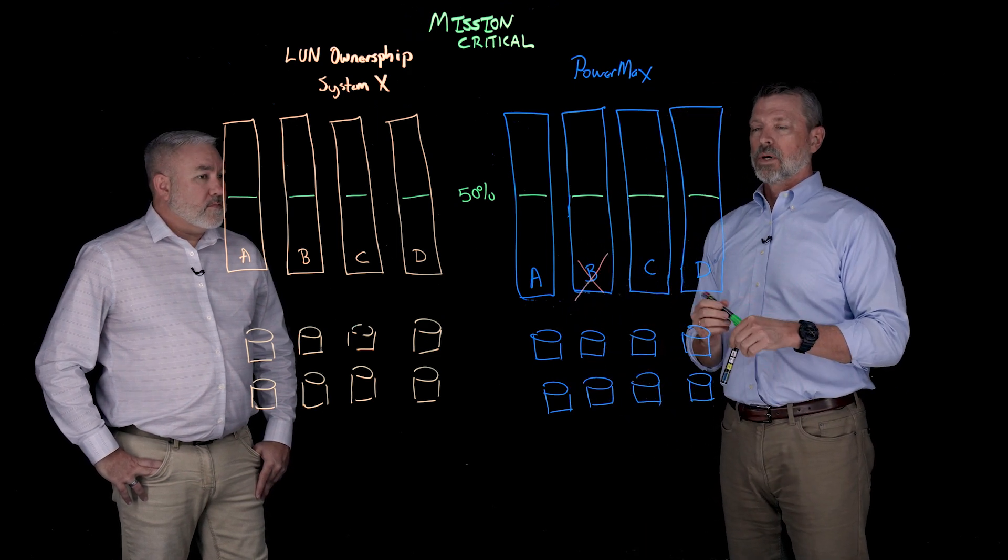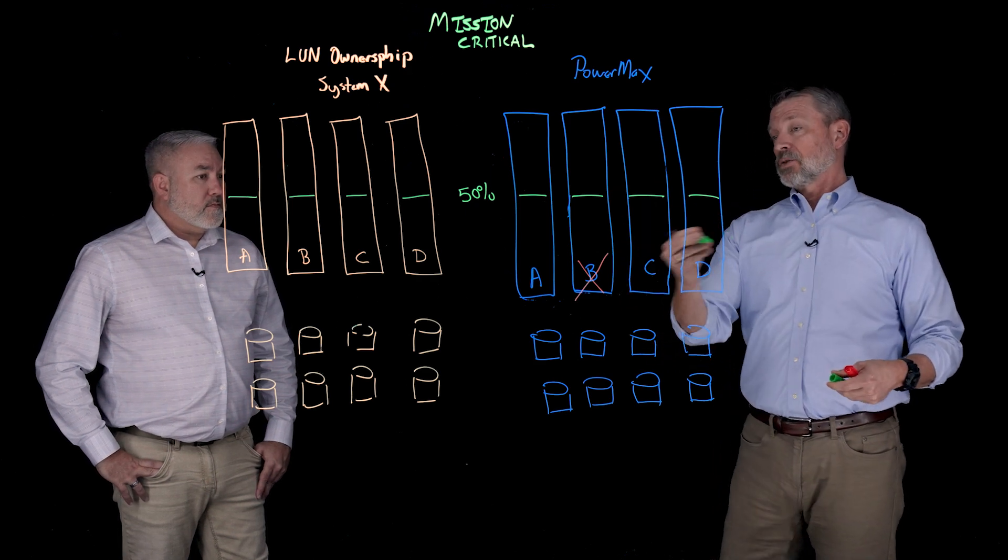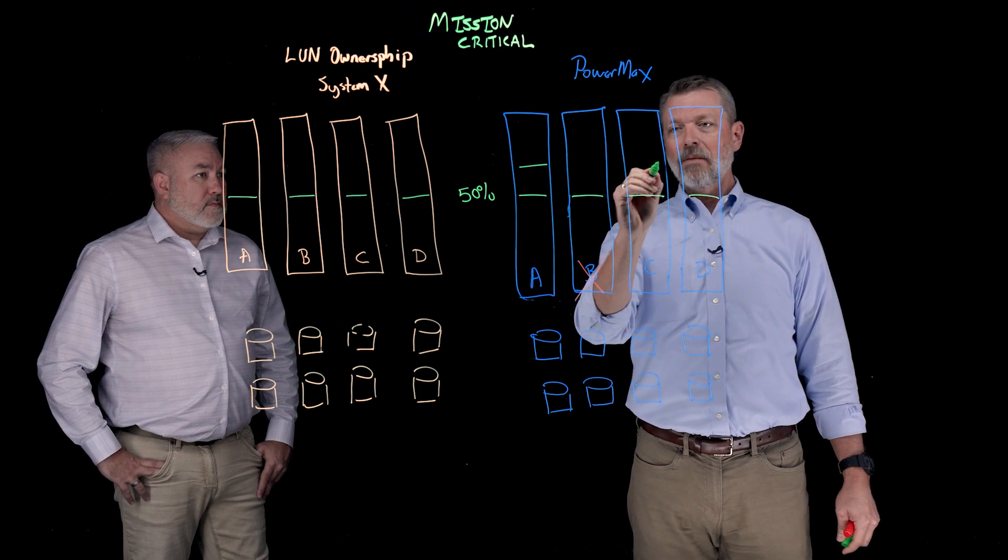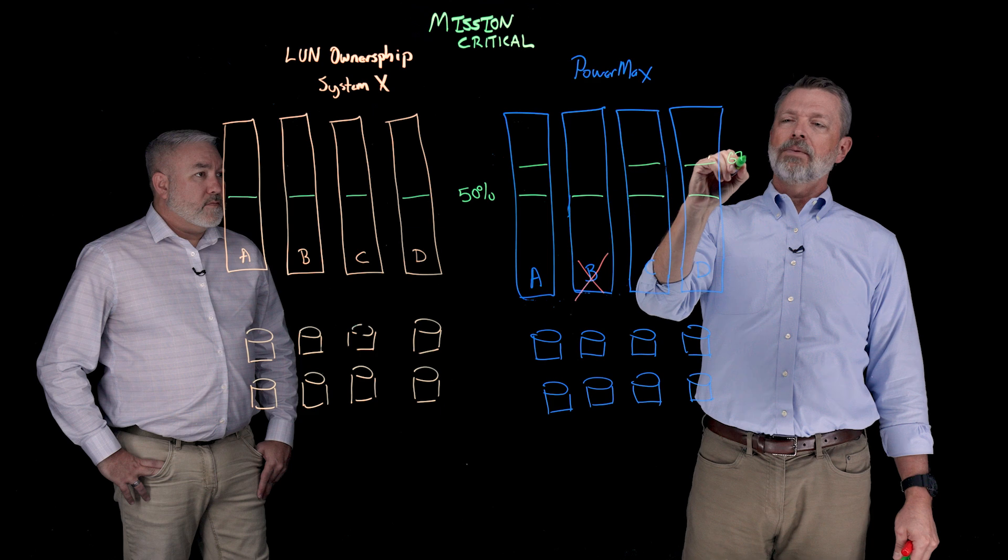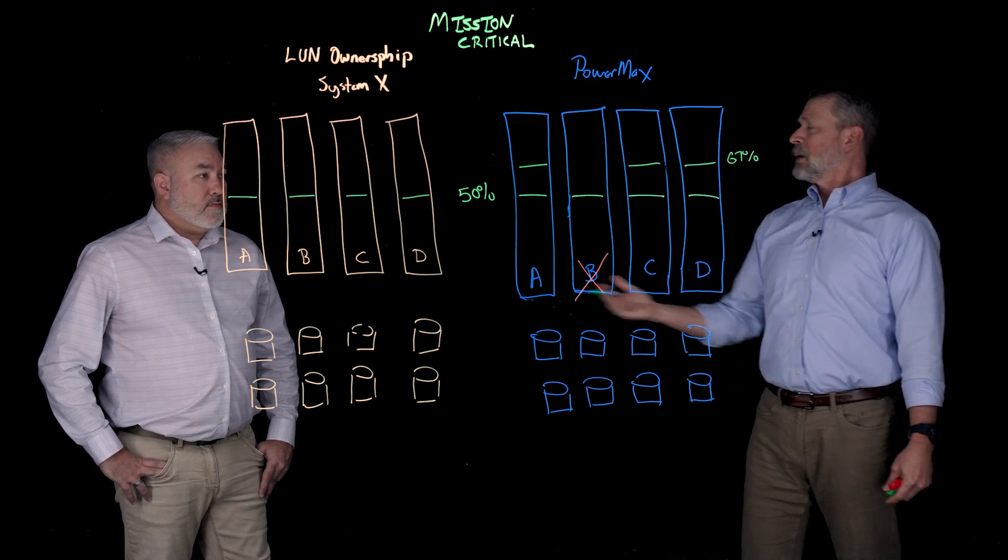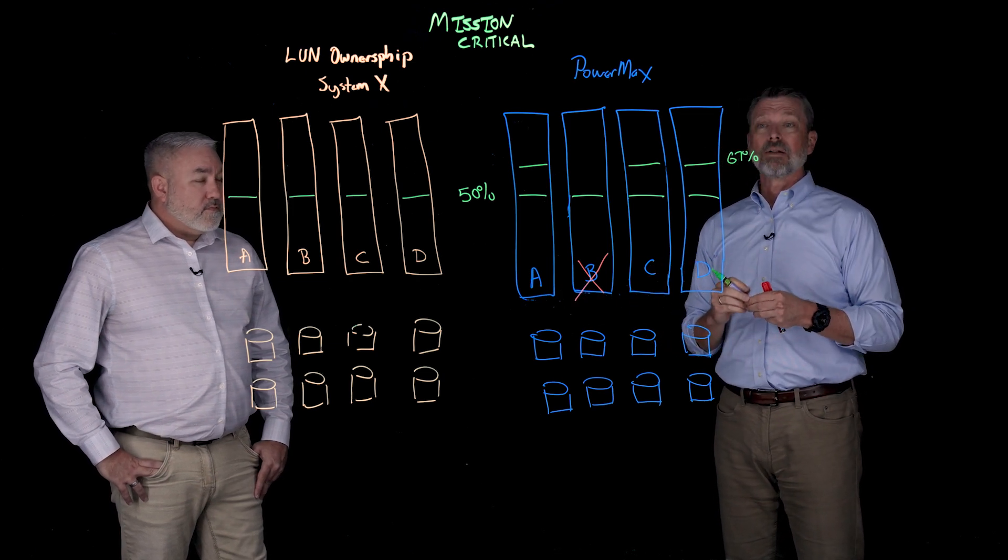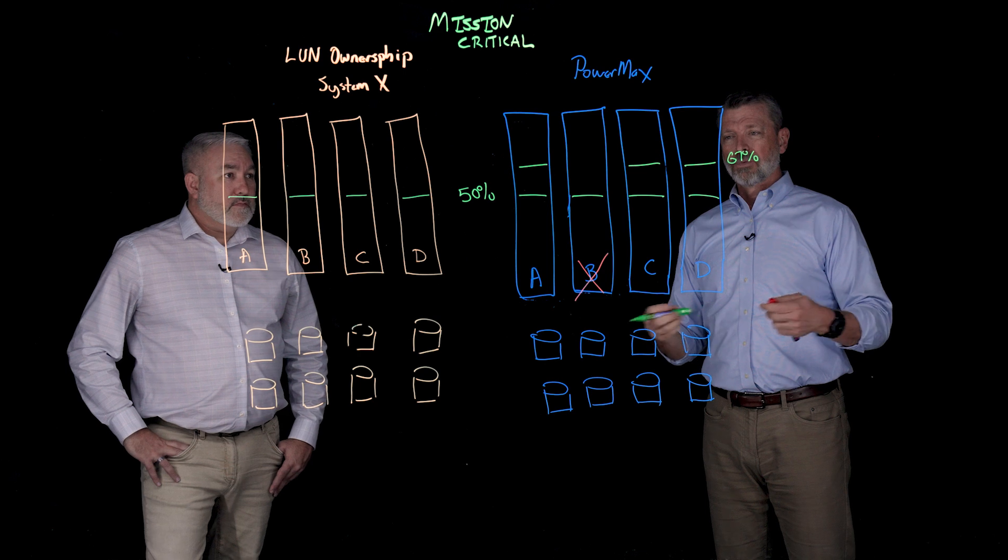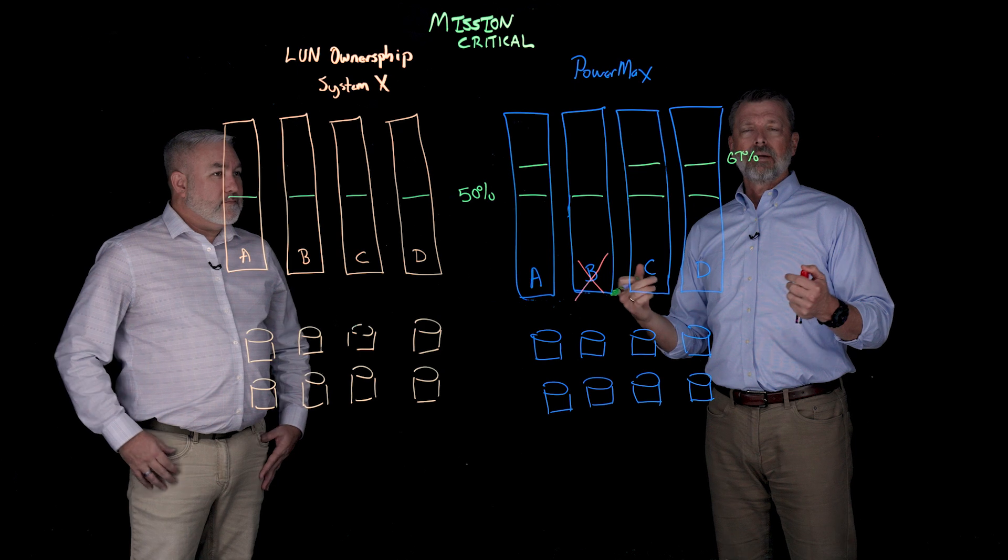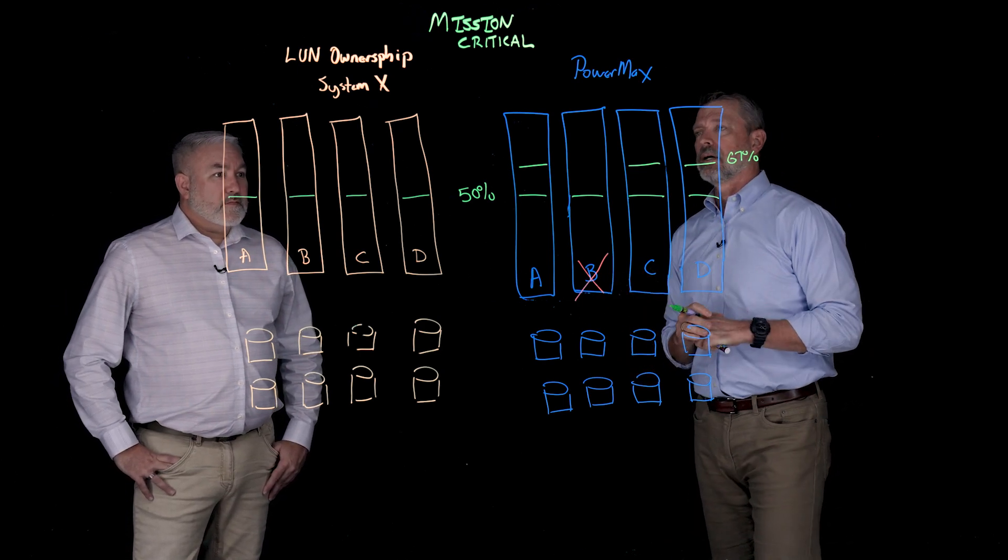At that point in time, what we're going to do is we're going to take all the I/O that was heading to controller B, and we're going to move it to A, C, and D. So by quick math here, this says we sort of jump up to about a 67% utilization. Now, that gets my attention, but I'm not in panic mode at 67%. I'm unlikely to be seeing any sort of throughput or performance impact associated with that. Non-impeding. But you did get my attention, and obviously, I've got to get a controller addressed.